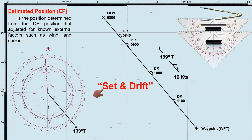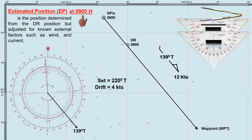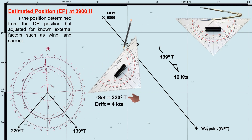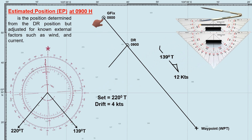By applying the set and drift to our DR position, we can determine our estimated position. In this scenario, let's assume we've already determined the set, which is 220 degrees true, with a drift of 4 knots. Let's determine the ship's estimated position at 0900 hours. First, lay down the tidal current direction of 220 degrees true from the ship's DR position at 0900 hours. Since the ship's steaming time from 0800 to 0900 hours is 1 hour and the speed of the current is 4 miles per hour, we'll measure 4 nautical miles on the latitude scale using a divider.